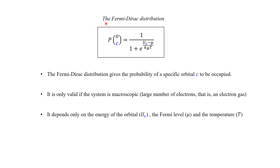This expression is the Fermi-Dirac distribution. The Fermi-Dirac distribution is the probability of finding a specific orbital C occupied — that's exactly what we derived. We can only use the Taylor expansion if the other system is macroscopic, so the Fermi-Dirac distribution is only valid when we are talking about a large number of electrons — in other words, when we are dealing with an electron gas. The Fermi-Dirac distribution depends only on the energy of the orbital of interest, the total potential, and the temperature of the system. We learned in lecture 9 that the total potential is the electrochemical potential — in other words, it is the Fermi level. So this parameter here is the Fermi level.